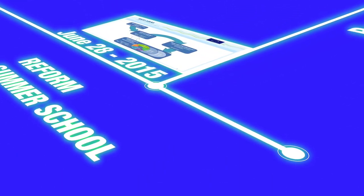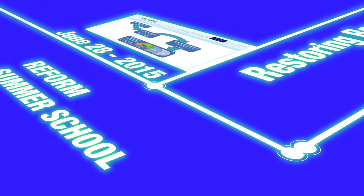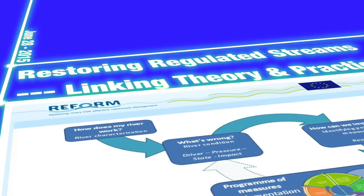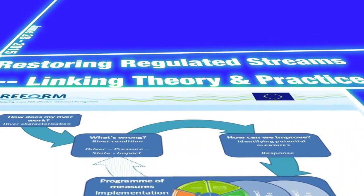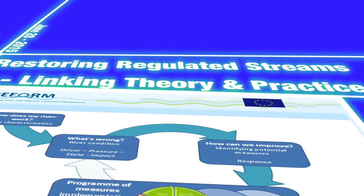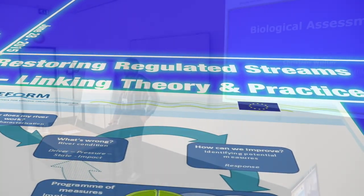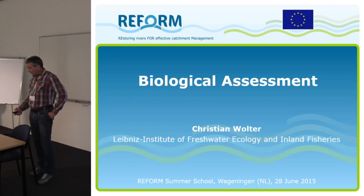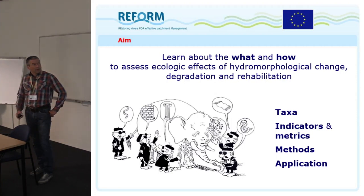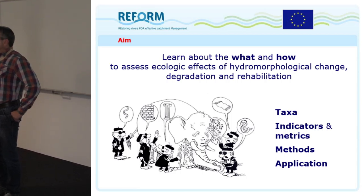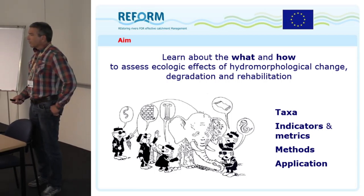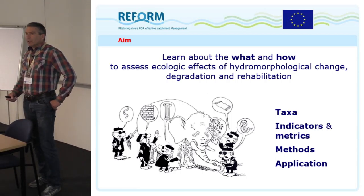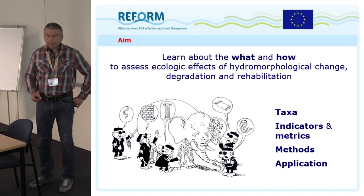My name is Christian Wolter. I'm a fish ecologist working at the Institute of Freshwater Ecology and Inland Fisheries in Berlin. In my talk, I will give you a brief introduction into biological assessment methods. The aim of this lecture is primarily that you get an overview of what can be measured, which taxa can be assessed, and how we do it.